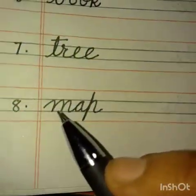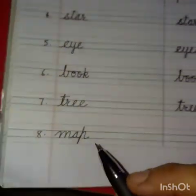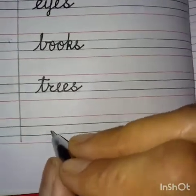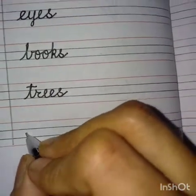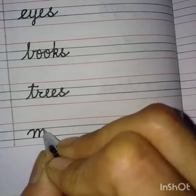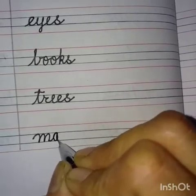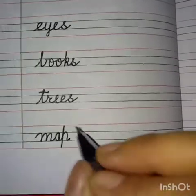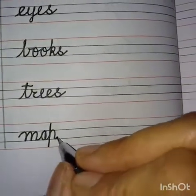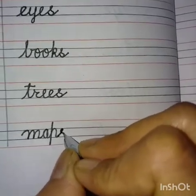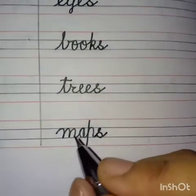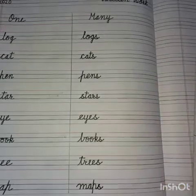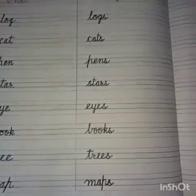Number eight: M-A-P — Map. One map. For many, what will we do? Yes, very good — add S here: M-A-P-S — Maps. Many maps.